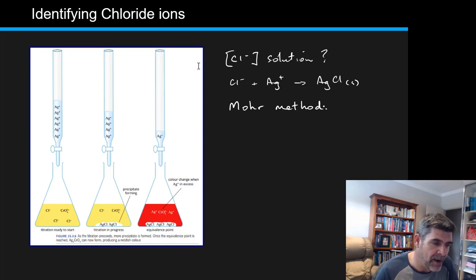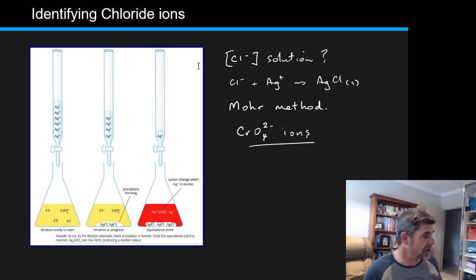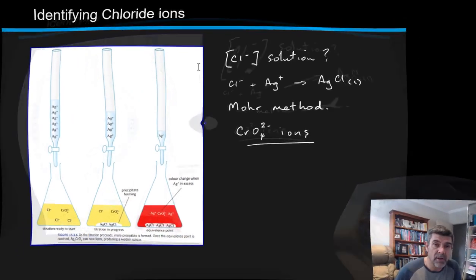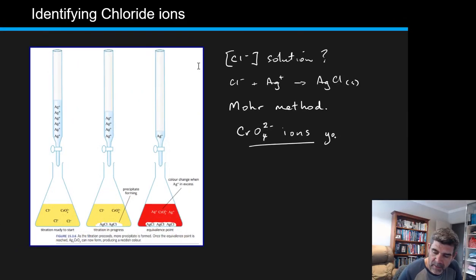So you can see the main thing that we're going to add as our indicator here are our CRO4 2- ions. And these ions are going to just slightly change the color of the solution. So the chromate solution is going to be yellow. Now we don't want to have too much of the yellow color in there because it actually may start to obscure this formation of our precipitate. So we have a precipitate forming there. The titration is progressing. We're starting to get more of our white solid starting to be produced.